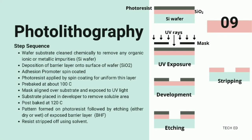Steps in photolithography: The wafer substrate, such as silicon wafer, is cleaned chemically to remove any organic, ionic, or metallic impurities. A barrier layer such as SiO2 is deposited onto the surface of the wafer. Adhesion promoter and photoresist are applied by spin coating to form uniform thin layers. The coated wafer is pre-baked at about 100 degrees Celsius. A photomask is lined over the substrate and exposed to UV light. The substrate is then placed in developer to remove soluble areas and post-baked at 120 degrees Celsius. The pattern formed on photoresist is followed by either dry or wet etching of the exposed barrier layer. The resist is finally stripped off using solvent.